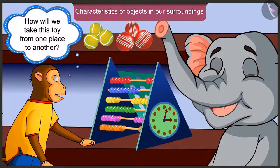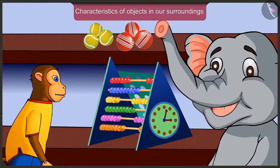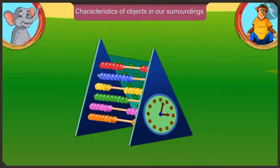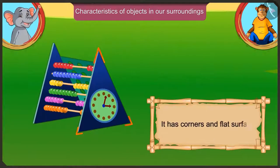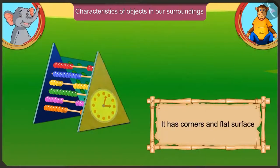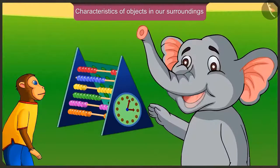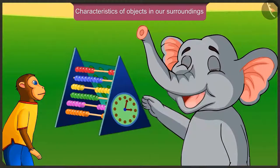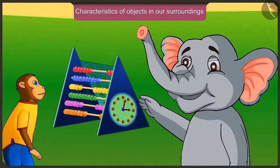Appu, how are we going to take this toy from one place to another? This is a very big toy. It is not round — it has corners and also a flat surface. For that reason, we cannot roll it like a ball. We will slide it like this.